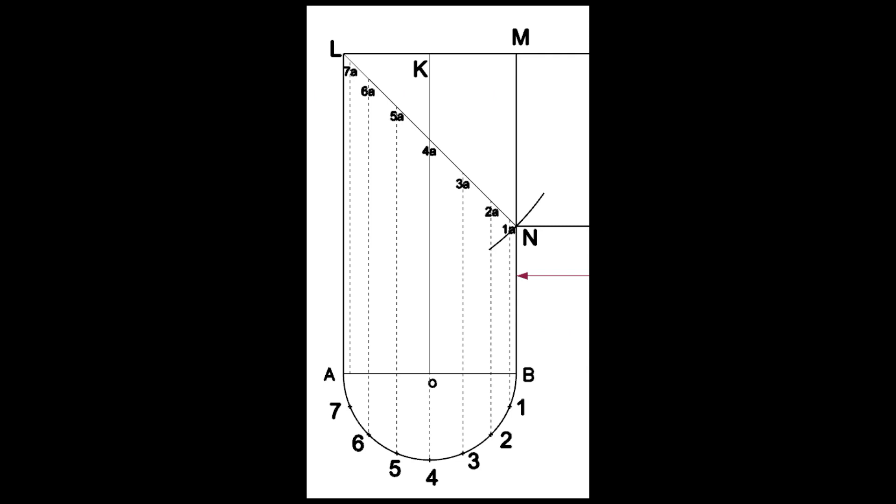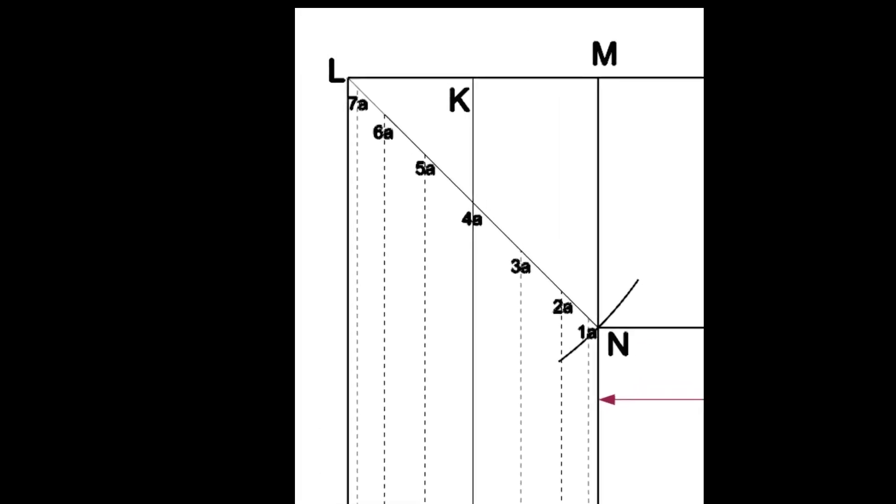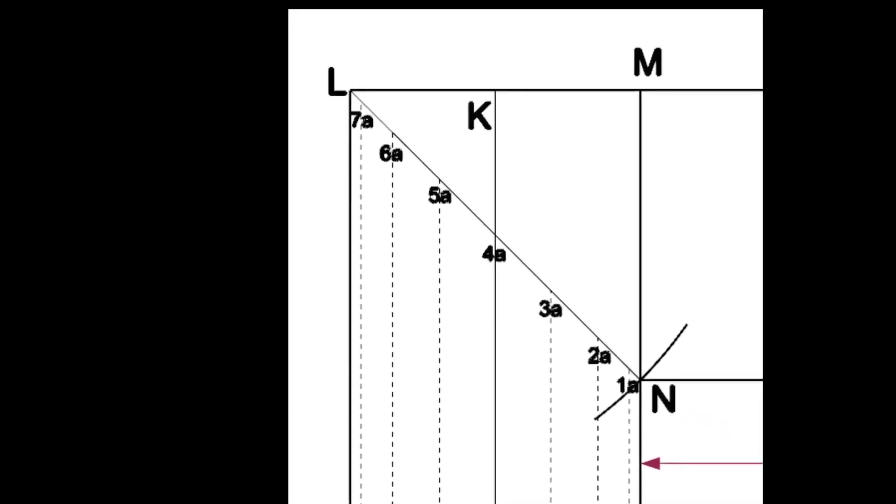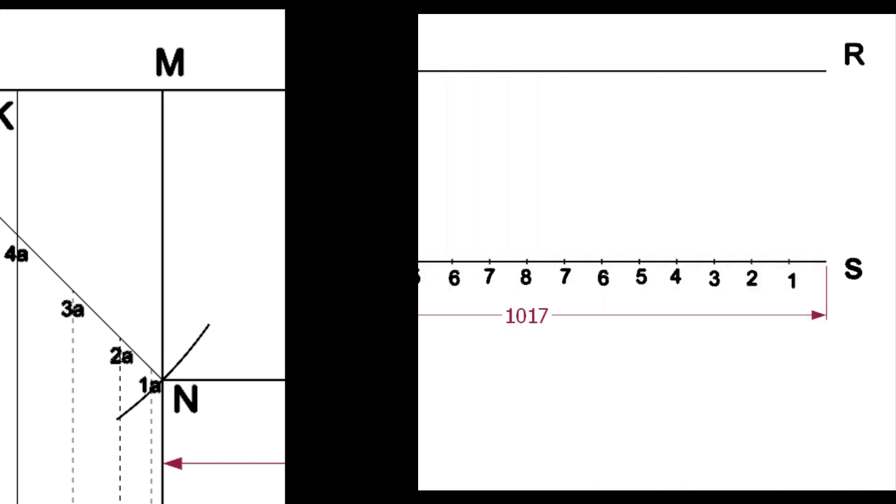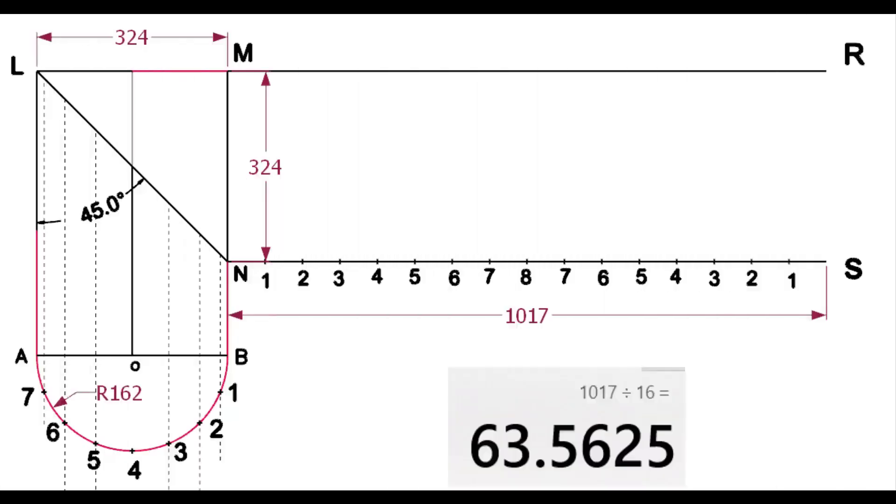Draw lines 77A, 66A, etc. intersecting the line LN. Divide the line NS into 16 equal parts. Don't forget to number the lines.